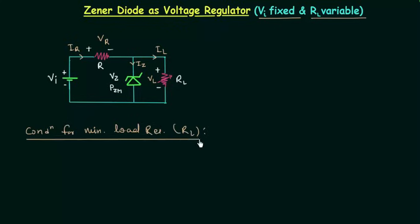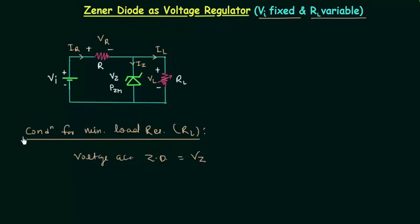When load resistance is minimum, voltage across the Zener diode is equal to Vz, because this is the boundary condition and we want to turn on the Zener diode. It will turn on when voltage across the Zener diode equals Vz. We can calculate this using Thevenin's theorem: Vth equals Vi multiplied by RL divided by R plus RL. This is the voltage across the Zener diode and it is equal to Vz.